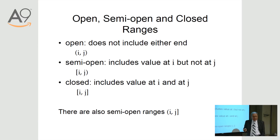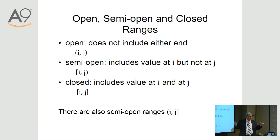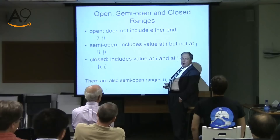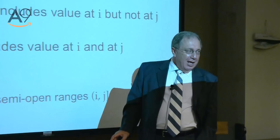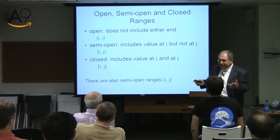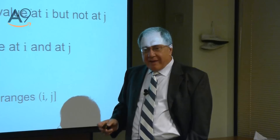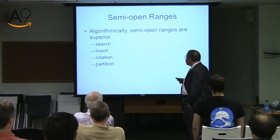Now a quick reminder of what kinds of ranges exist. Open interval means neither i nor j belong to the range — its elements are strictly inside. Semi-open means the left endpoint is included but not the right. Closed means both endpoints are included. There's also a backward semi-open range. Semi-open ranges are algorithmically superior — they allow us to do everything correctly.